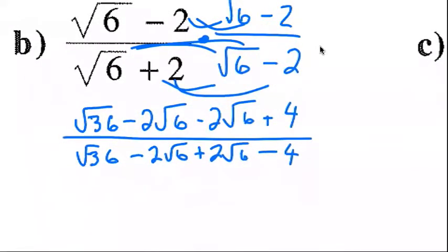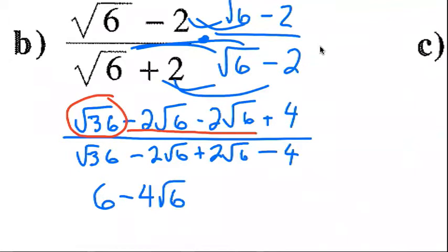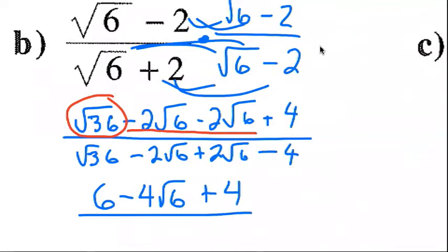Square root of 36 on the top — that's going to be 6. Minus 2 root 6 minus another 2 root 6 — that's minus 4 root 6. Then minus 2 root 6 plus 2 root 6 — that's going to cancel. Minus 4 plus 4. All over: square root of 36 is 6, minus 2 root 6 plus 2 root 6 — that's going to cancel — minus 4. So really I have 6 minus 4, minus 4.